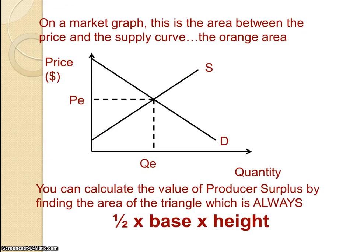So the difference between marginal cost and the price they actually get for the product is producer surplus. Coming back to our graph, it's the area between the price PE and the supply curve out to QE. The orange area there is producer surplus. You can calculate the value of that the same way — half times base times height — where the base is out to QE and the height is from PE down to where the supply curve intersects the price axis.